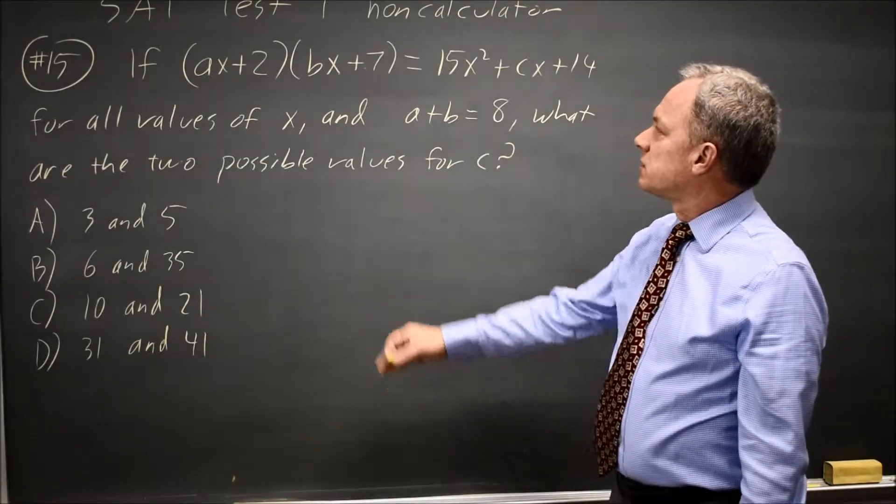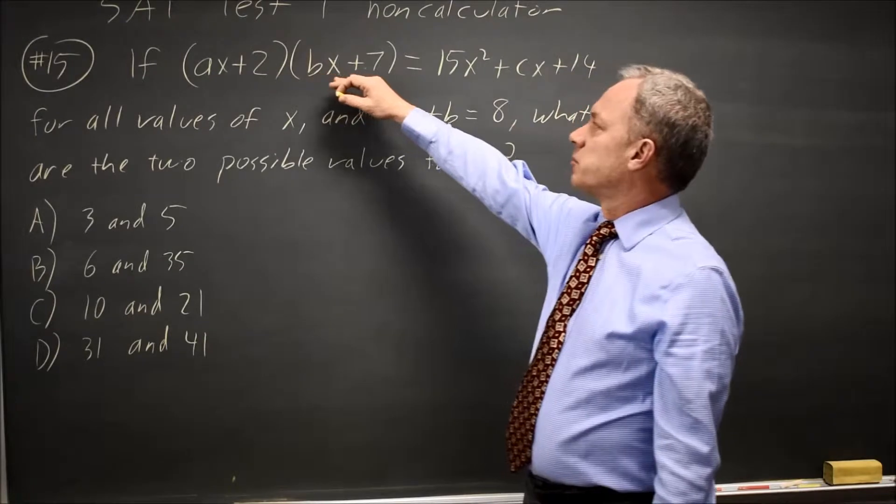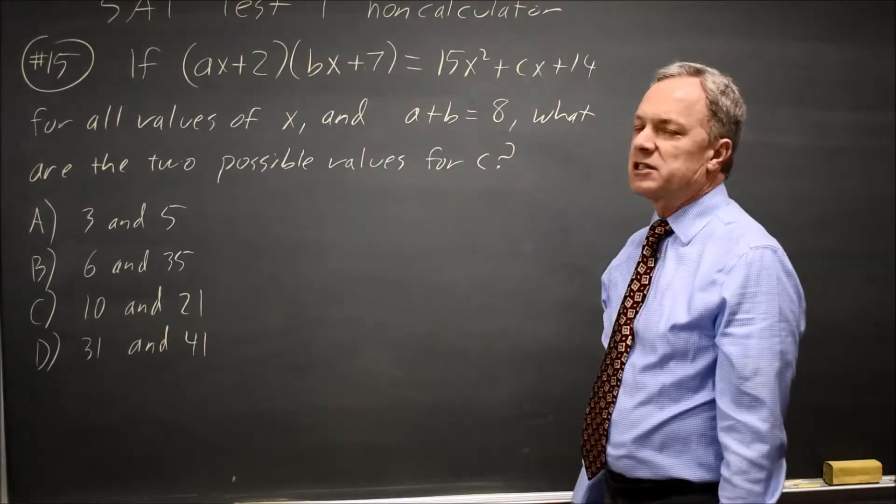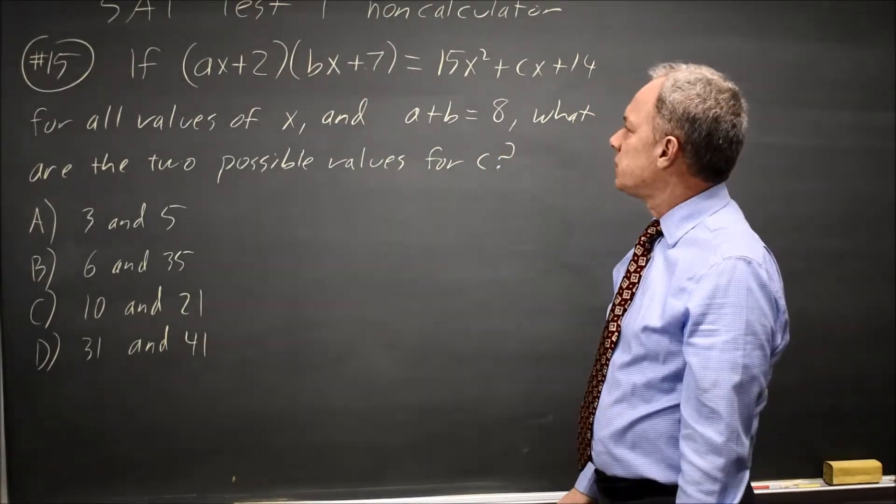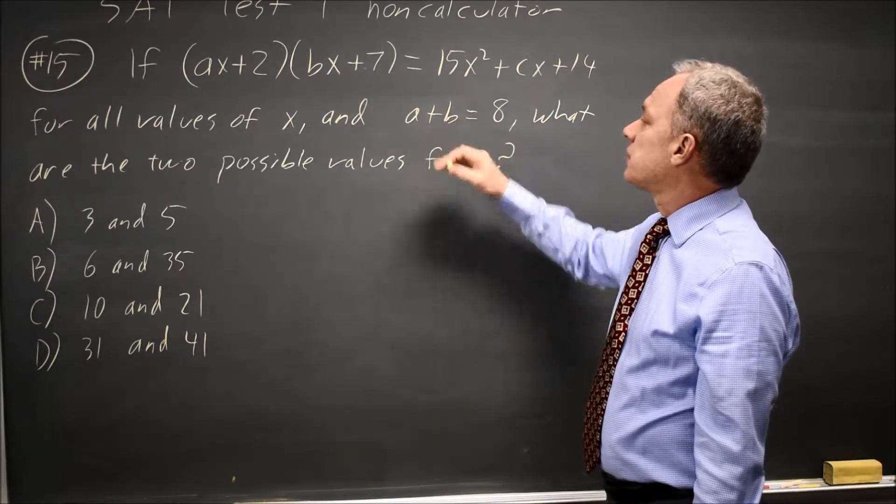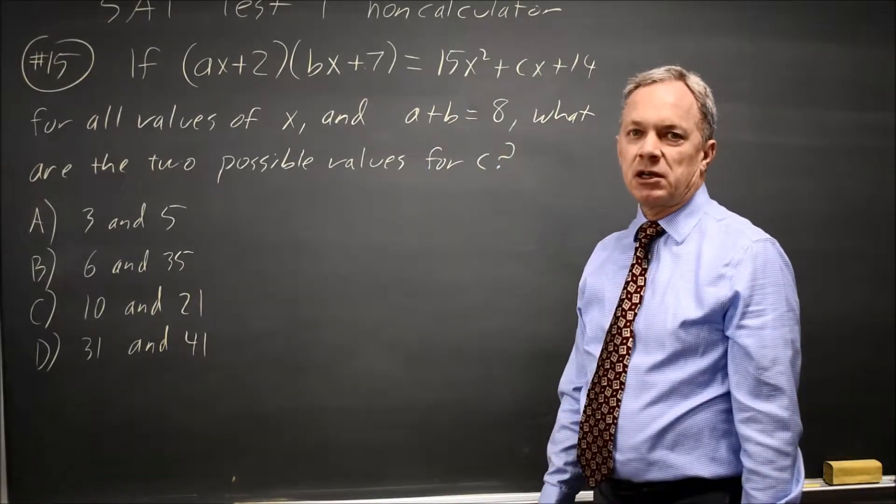And they say for AX plus 2 times BX plus 7 equals 15X squared plus CX plus 14. If A plus B equals 8, what are two possible values for C?